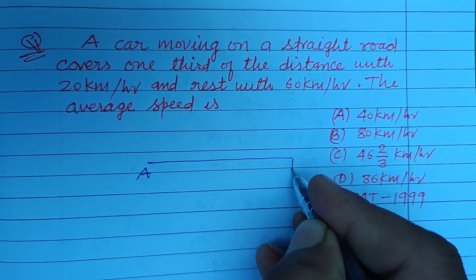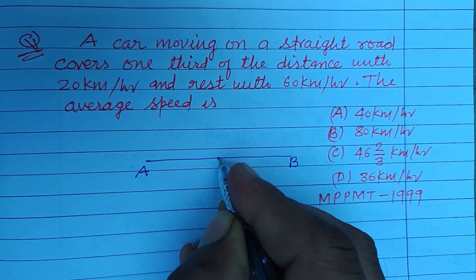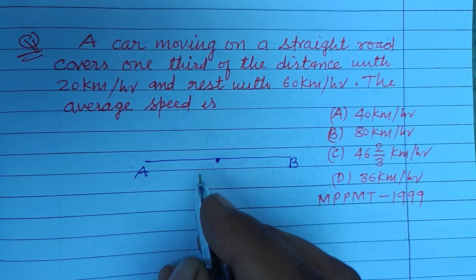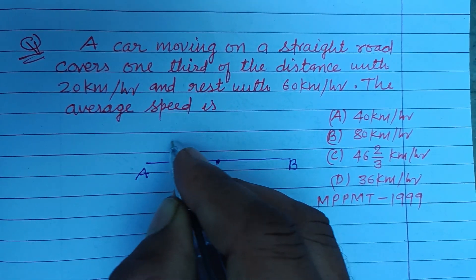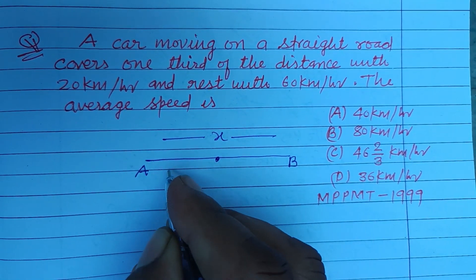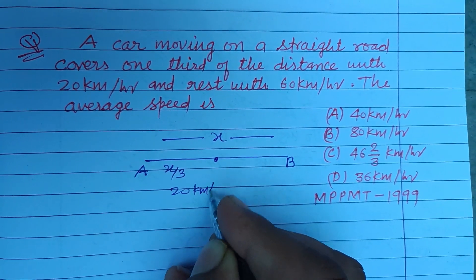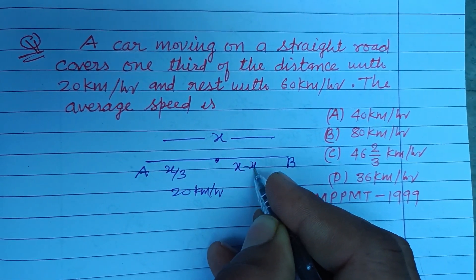Students, this is the distance which is covered by car, and the speed of the car is different in two parts. If the total distance is X, then X/3 is covered with 20 km per hour, while X minus X/3, which is 2X/3, is covered with 60 km per hour.